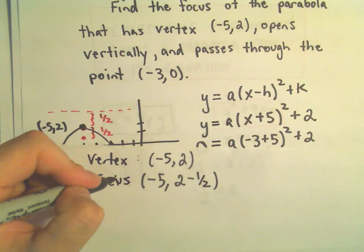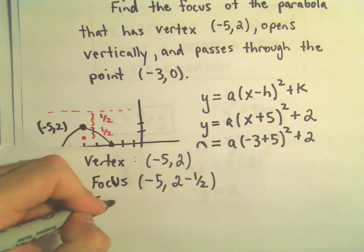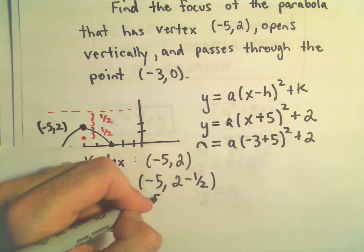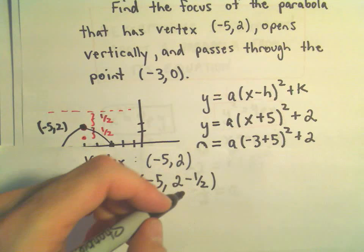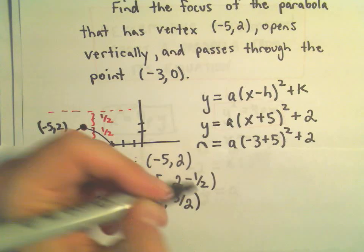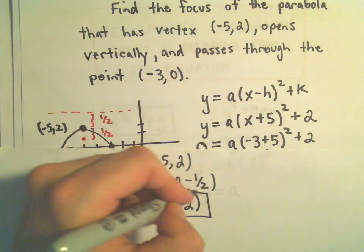So in this case, our focus would be at (-5, 3/2), because 2 minus 1/2 gives us 3/2. So that would be the focus in this case.